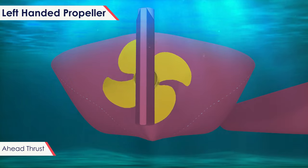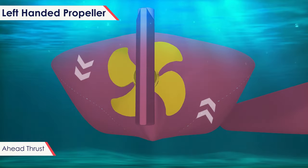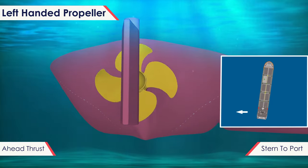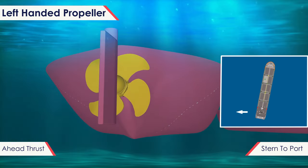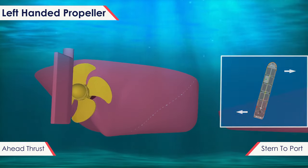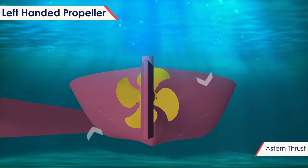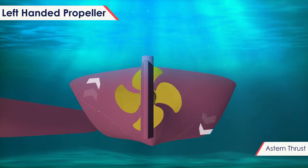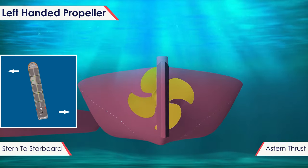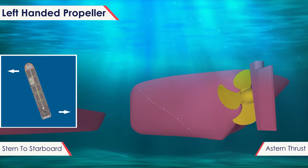On a left-handed propeller ship, for ahead thrust, the propellers will be turning anticlockwise. As a result of the paddle wheel effect, the stern of the ship will walk to port and the bow will cant to starboard. For a stern thrust, the propellers will be turning clockwise. As a result of the paddle wheel effect, the stern of the ship will walk to starboard and the bow will cant to port.